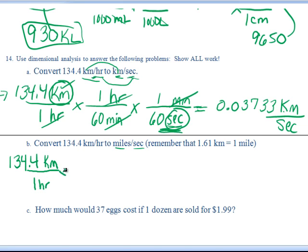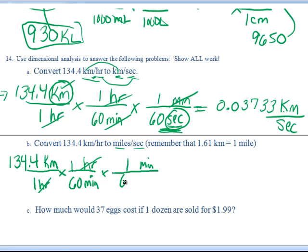One hour. Pick your favorite unit — do you want to cancel hours out first or cancel kilometers out first? It doesn't matter; you're going to do them both eventually. Let's keep going with hours since we did hours above. I'm going to put one hour is 60 minutes, then get rid of minutes by putting minutes on top — one minute is 60 seconds. So there goes my minutes; now I have seconds, and I want to end in miles per second, so I circle that.